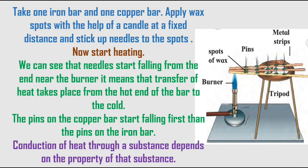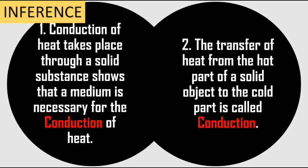To prove this, take an iron bar and a copper bar. Apply wax spots at fixed distances using a candle and stick pins or needles to them. Start heating and observe: the needles start falling from the end near the burner, showing heat transfers from the hot end to the cold end. The pins on the copper bar fall first, showing conduction depends on the material. We can infer: conduction requires a solid medium, and heat transfer from the hot part to the cold part of a solid is called conduction.